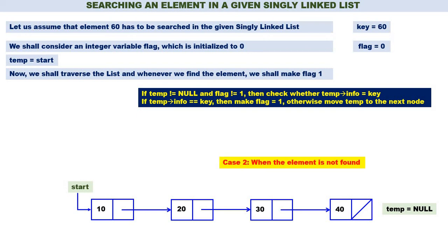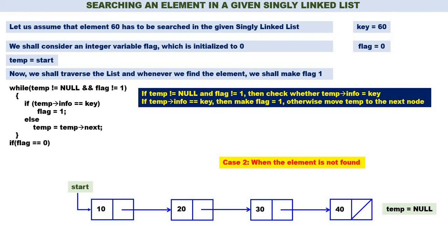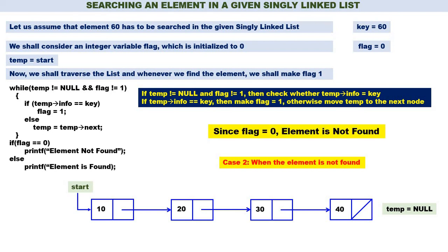This is case 2 when the element is not found. We traverse completely through the list until temp becomes null, but the element is not found. Same while loop: while temp not equal to null and flag not equal to 1. If temp of info is equal to key, flag is equal to 1; otherwise temp is equal to temp of next. After coming out of the while loop, flag is still 0 — we never made flag equal to 1 because the element was not found. Since flag is equal to 0, the element is not found. We have discussed both cases: case 1 when the element is found, case 2 when the element is not found.